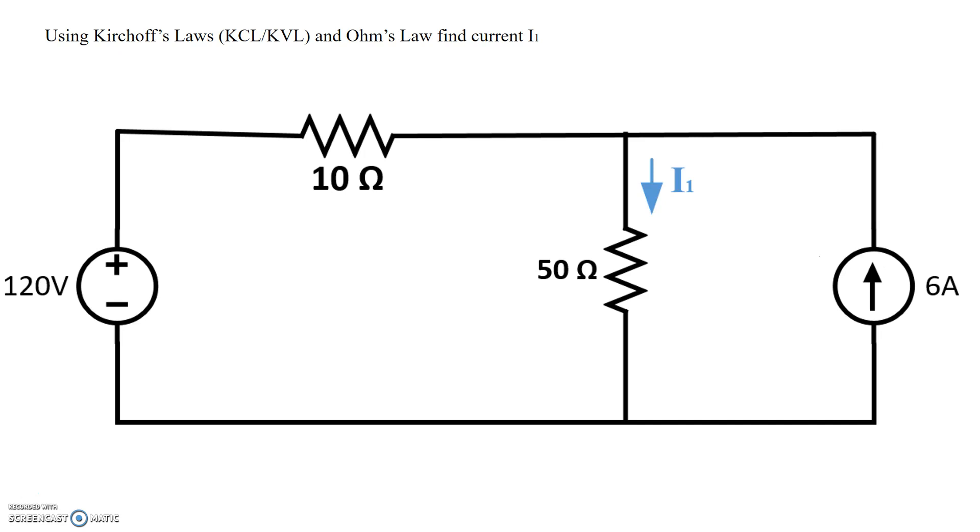Alright, so let's get started here. So we'll first look at applying Kirchhoff's current law. Before we do that, we need to first pick the polarity of currents and voltages on the different resistive elements here. We basically just assign a particular direction for a current, and then based on that, we get the polarity of the voltage.